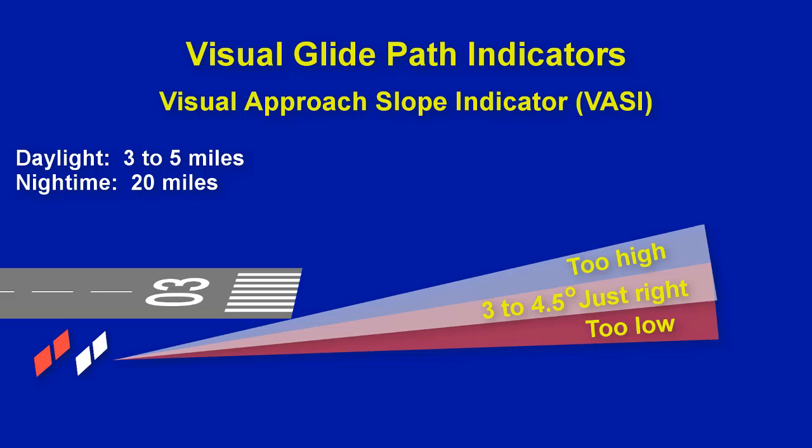White and red lights are used to help you determine whether you are above, below, or right on the glide path. If you are flying below the glide path, you will have two red bars. On the glide path will display a red and white combination, and all white means you are above the glide path.